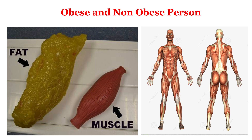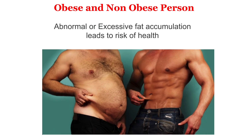If you see the anatomical structure beside the muscles, you can find that every muscle has its own shape, location, beginning and ending point, whereas fat doesn't have that. Therefore, through these two pictures, you can easily recognize who is the obese person and who is not.